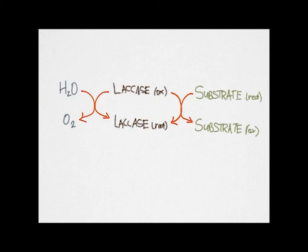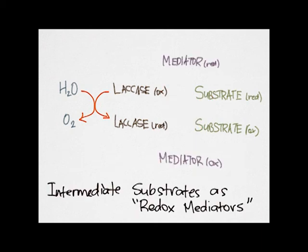Often the reducing substrate has a particularly high redox potential or is too large for the active site of the laccase and can't be oxidized directly. This can be overcome by adding redox mediators, low weight molecular compounds that act as an intermediate substrate. Their oxidized radical forms are then able to interact with the more bulky or higher redox potential substrates.